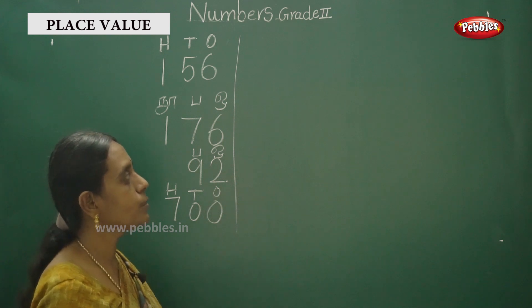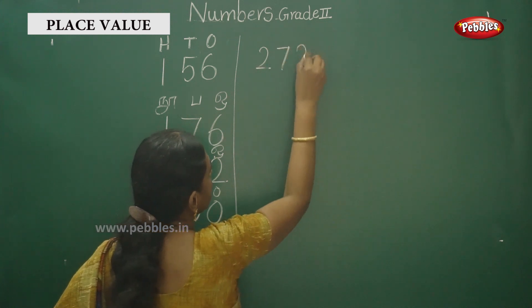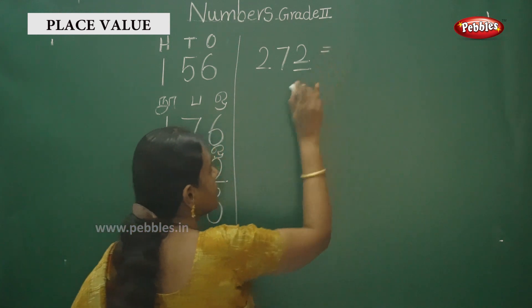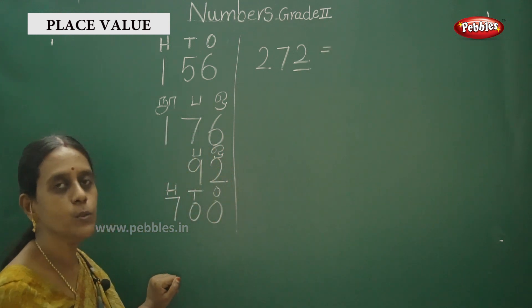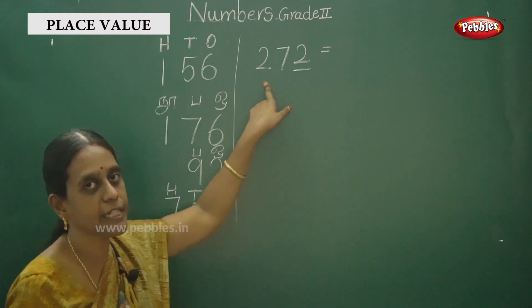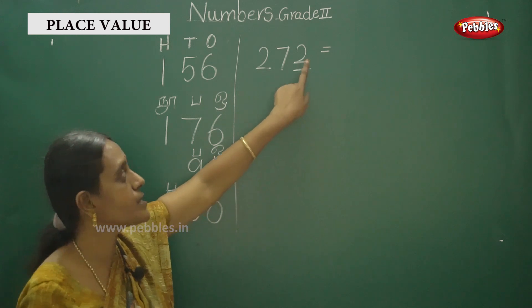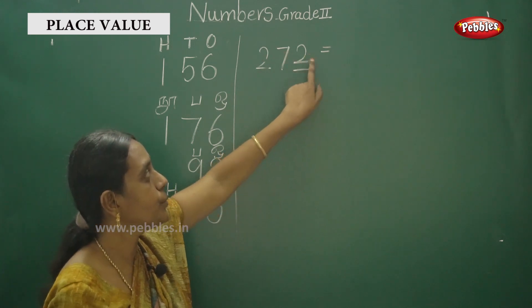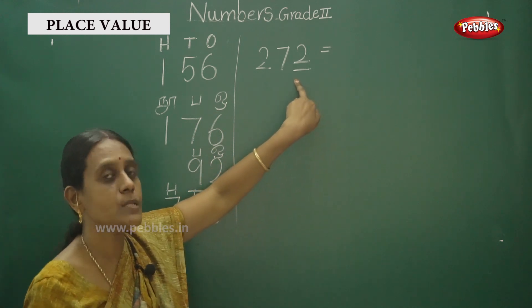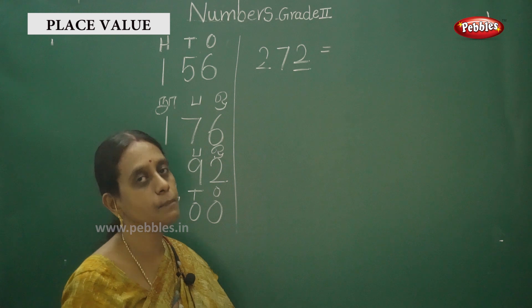Then we have to discuss one more example here. Okay — find out the place value. Question: okay, the number is 272. Now, what digit is underlined? First, 2 is underlined. So find the place value — that is, find the place value. This is your question.